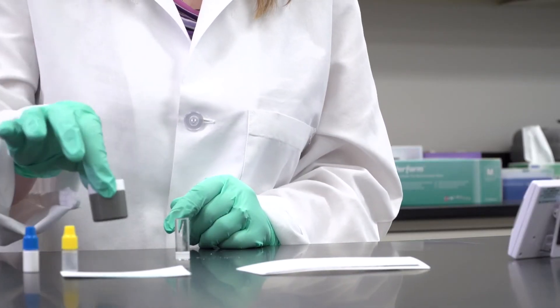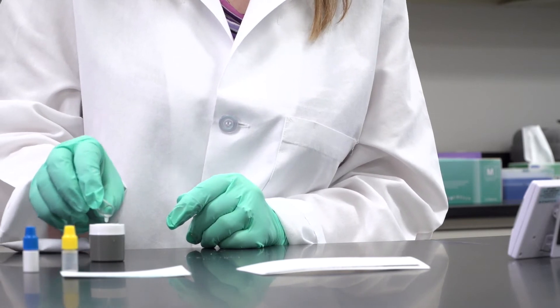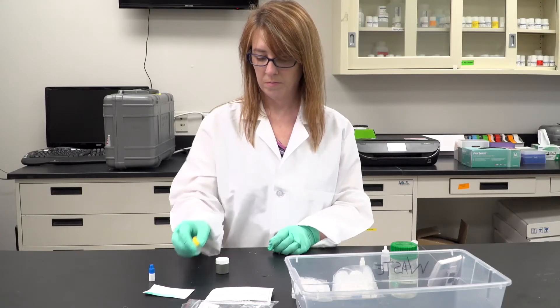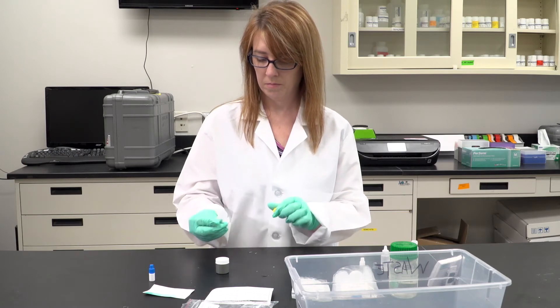Pour contents of immunoreagent vial onto test membrane device and wait until all liquid is absorbed through the membrane. Squeeze wash solution onto test membrane device and wait until all liquid is absorbed through the membrane.